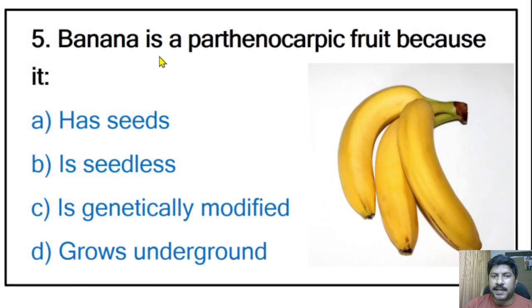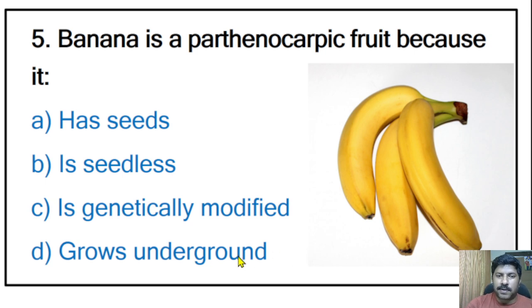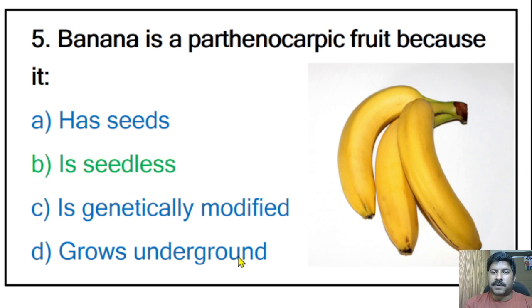Fifth question: banana is a parthenocarpic fruit because it — has seeds, is seedless, is genetically modified, or grows underground? The correct answer is that banana is seedless, and that is why it is known as parthenocarpic.